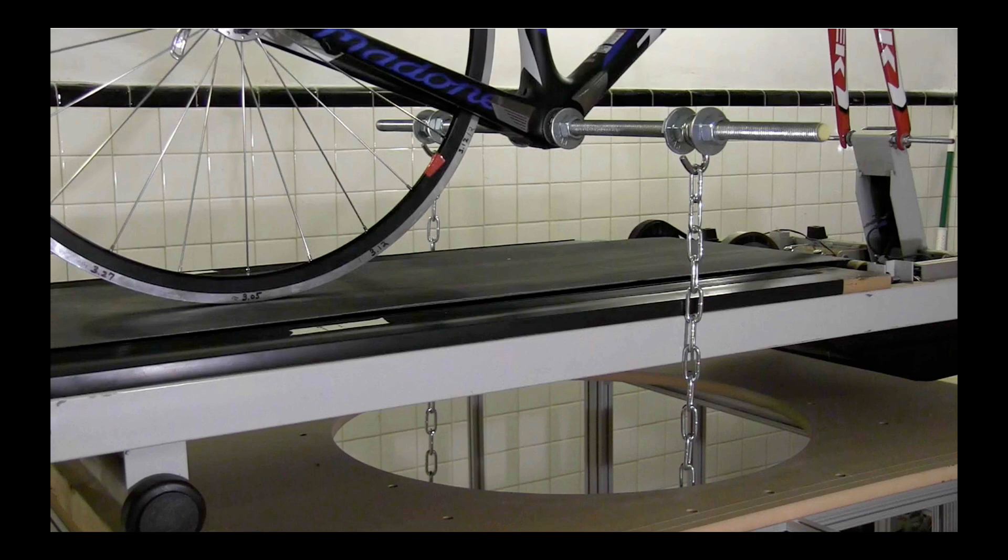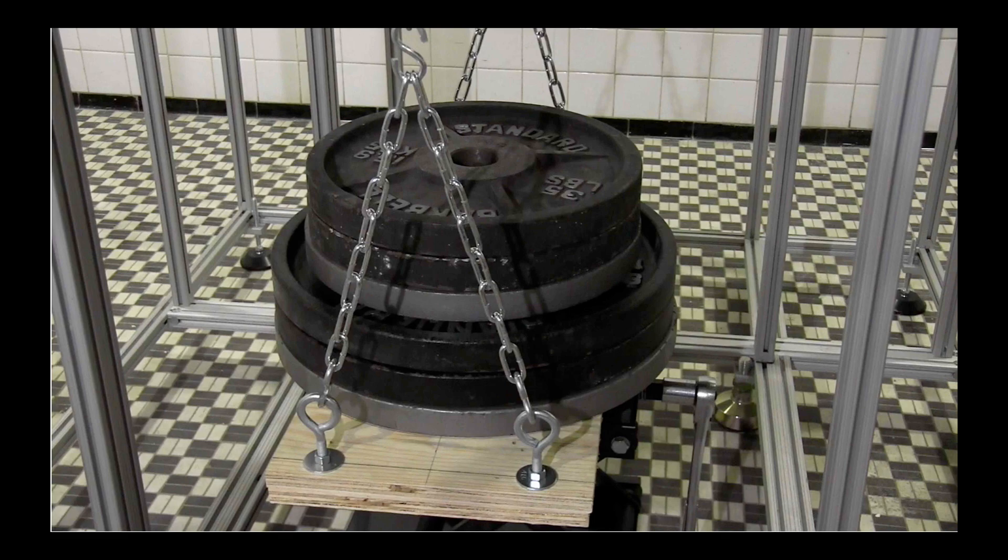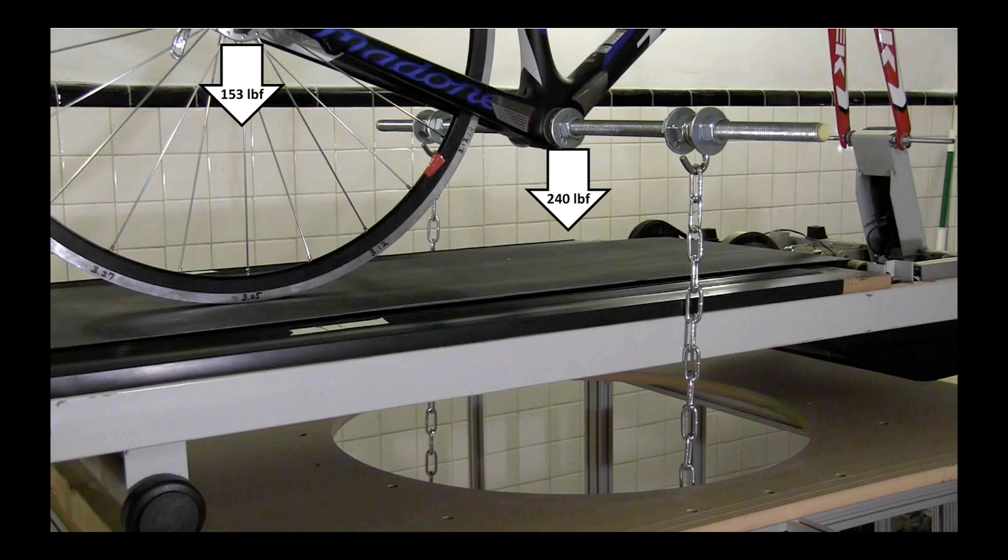The rear wheel of the test bike is resting on a treadmill and those chains run through a hole in the table to a swing that has between 240 and 320 pounds of weights. 240 pounds on the bottom bracket results in 153 pounds on the rear wheel.